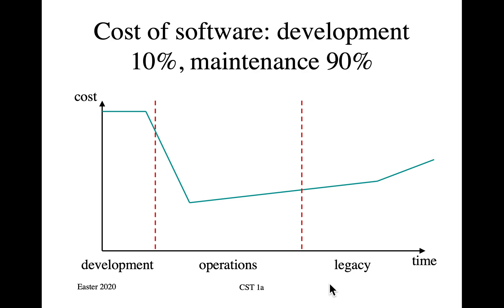What people rapidly discovered in the 1950s when they started using computers is that although they initially thought the cost of software would be an upfront one-off cost, it turned out not to be that way at all. The initial development cost was perhaps 10% of the total, because you spent an order of magnitude as much again maintaining the software through the system's life.